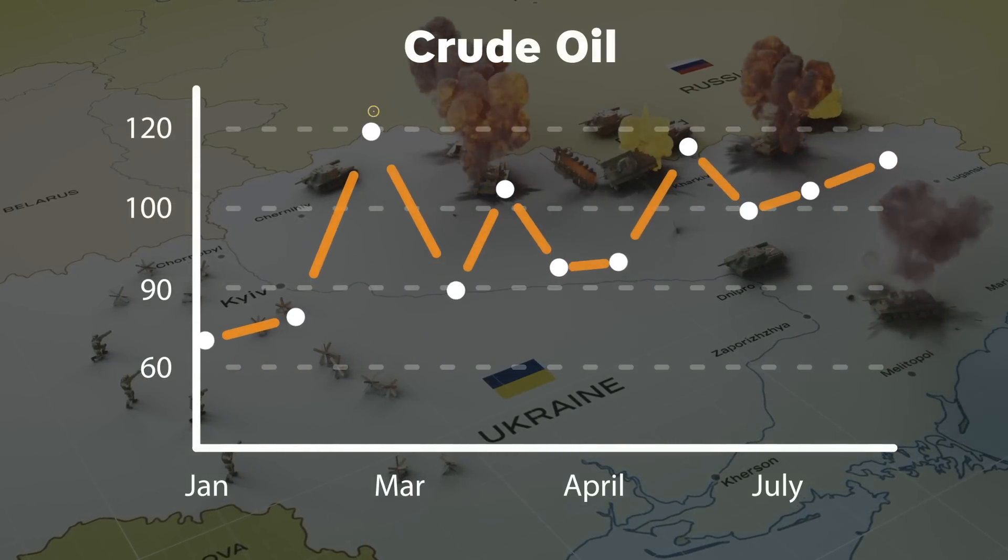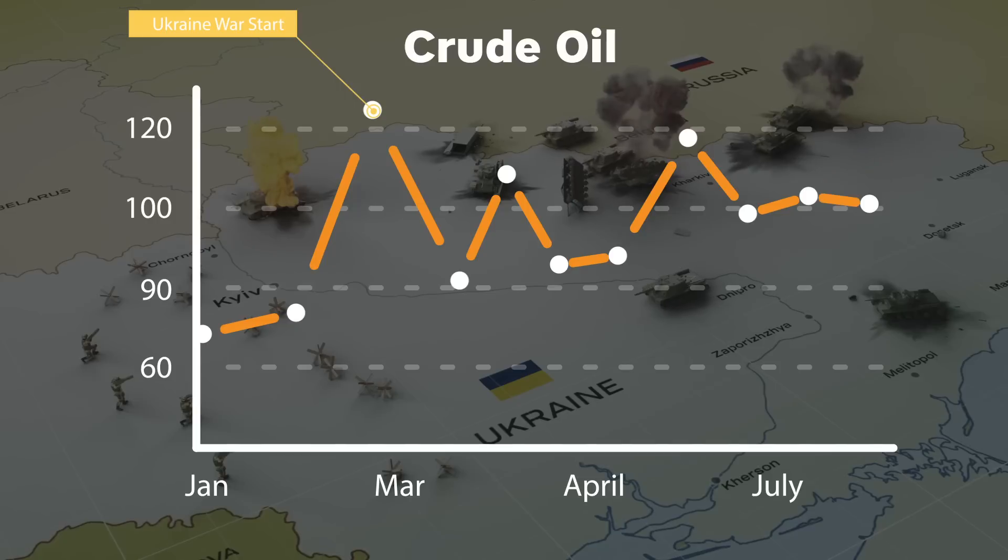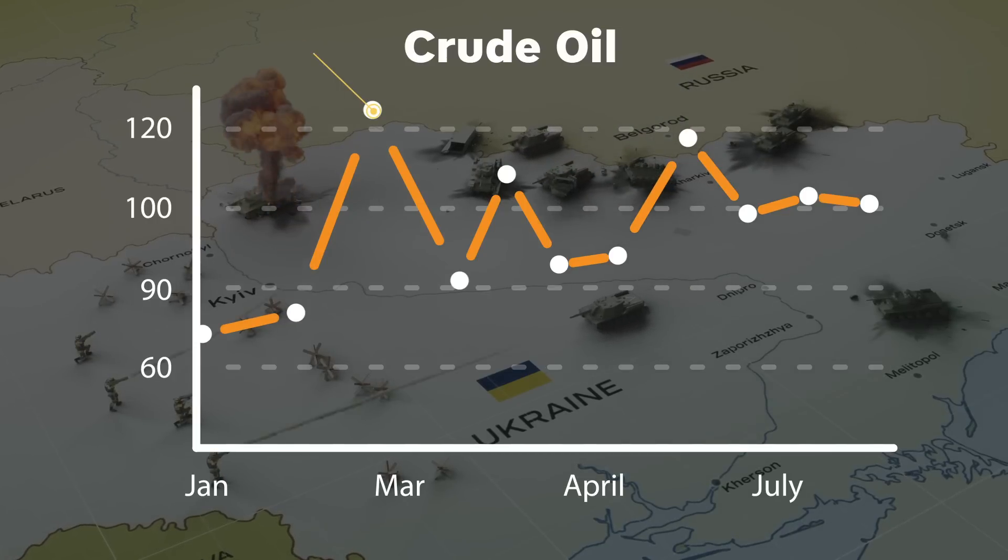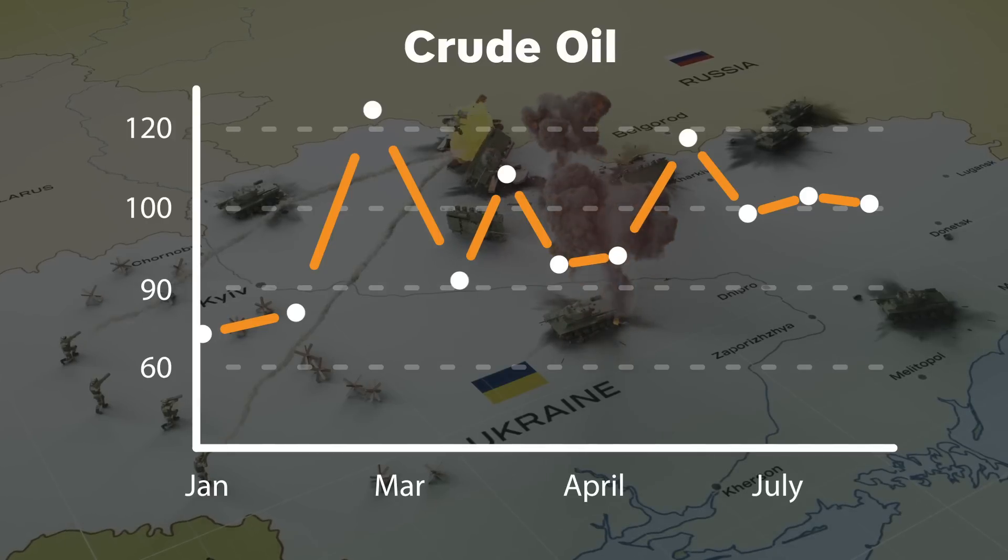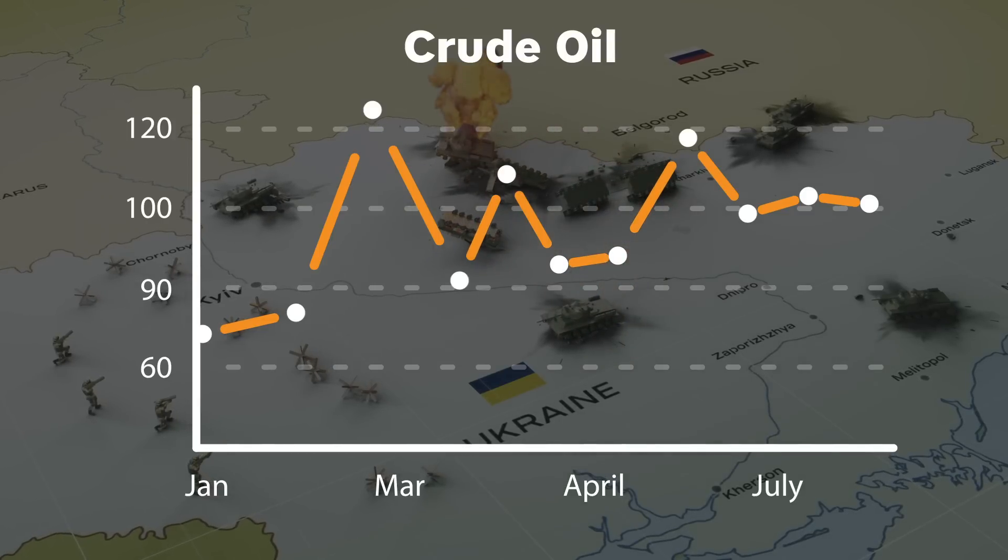Before the invasion, oil prices were fluctuating from $60 to $93 per barrel and when the invasion started, it shot up to $130 and have subsequently come down to about $100.